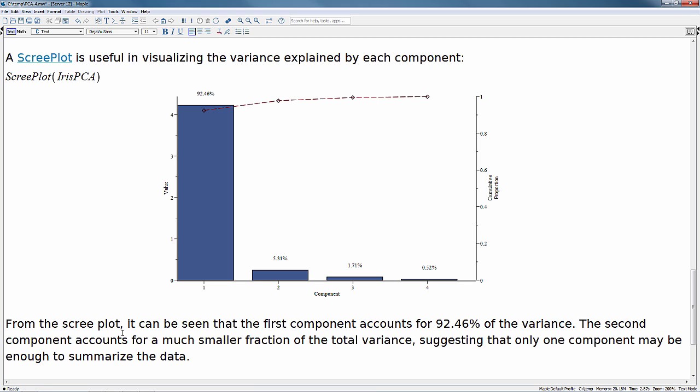As we can see, the second component really accounts for a much smaller fraction of the total variance, and this often suggests that one component may be enough to summarize the variability in the data.